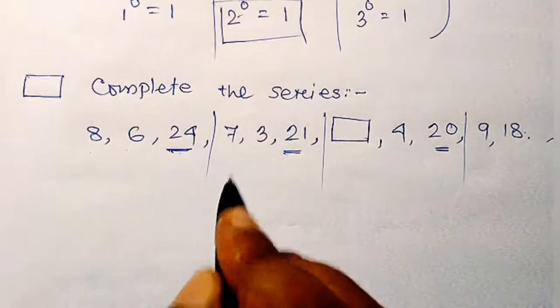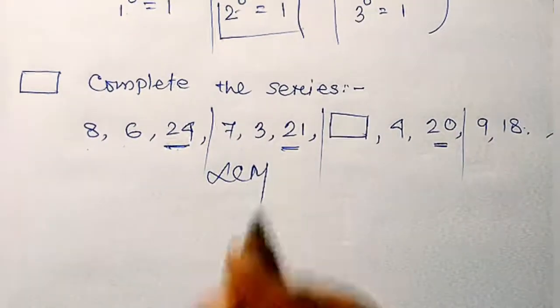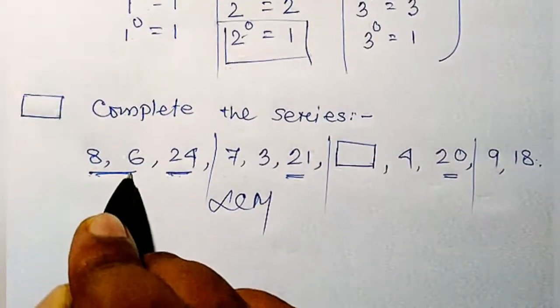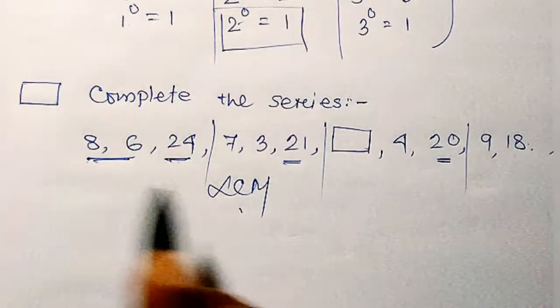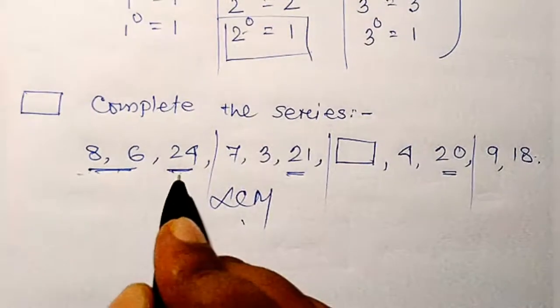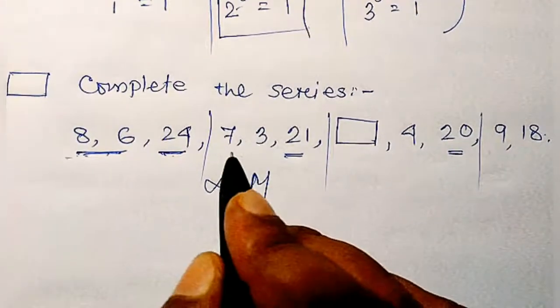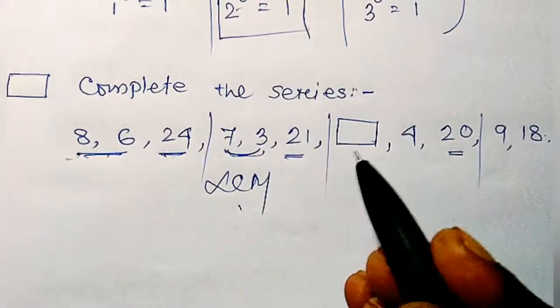The third number is the LCM of the first two numbers. 8 and 6, if you find the LCM of 8 and 6, you will get 24. And if you take the LCM of 7 and 3, then you will get 21.